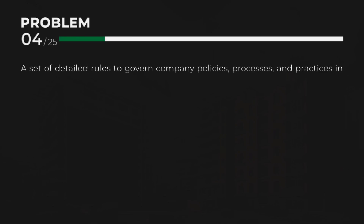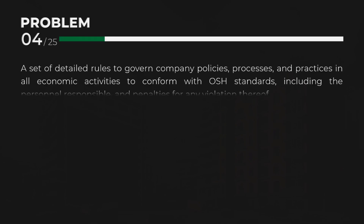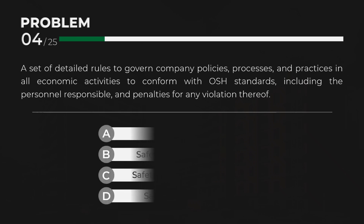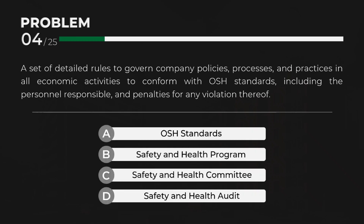B. Safety and Health Program — A set of detailed rules to govern companies' needs, company policies, processes, and practices in all economic activities to conform with OSH standards, including the personnel responsible and penalties for any violation thereof.